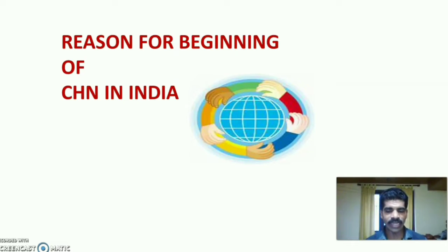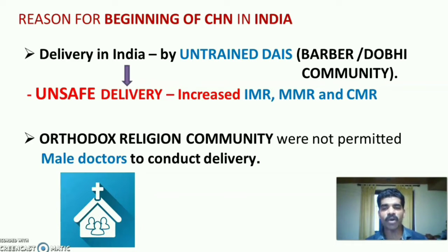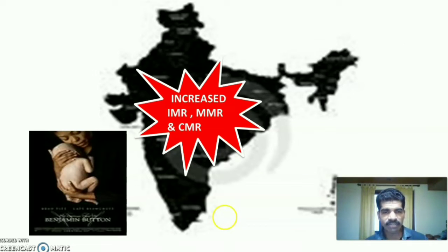The reason for the beginning of community health nursing in India: human delivery was practiced by untrained dais who belonged to the Barbar or Dobie community. The dais were not trained properly or given education regarding the conduct of delivery, leading to unsafe delivery, and increased infant mortality rate, maternal mortality rate, and child mortality rate. Though male gynecologists and missionary doctors existed, the orthodox religious community in India did not permit them to conduct deliveries.